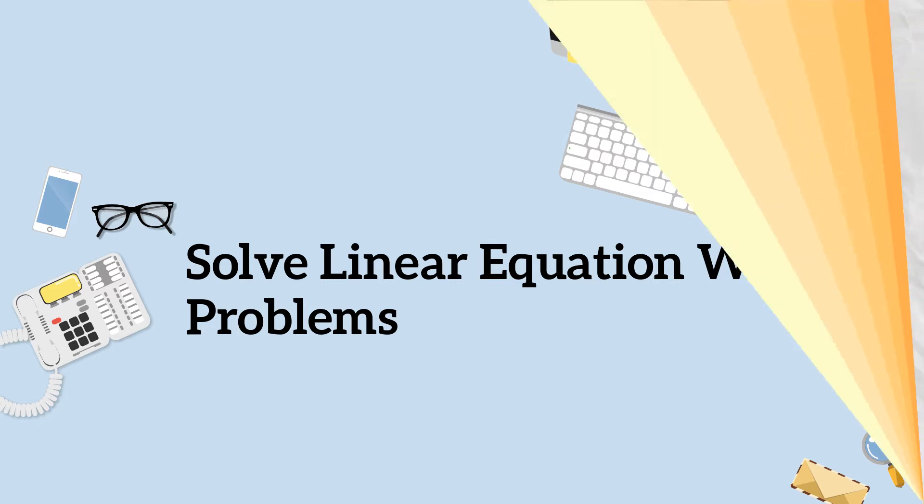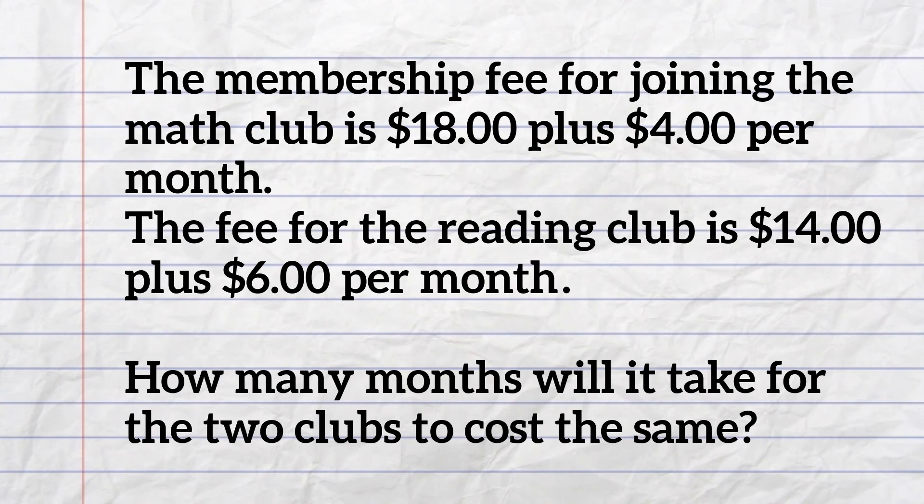The word problem goes like this: The membership fee for joining a math club is $18 and $4 per month. To join the reading club costs $14 and $6 a month. How many months will it take for the two clubs to cost the same amount of money?